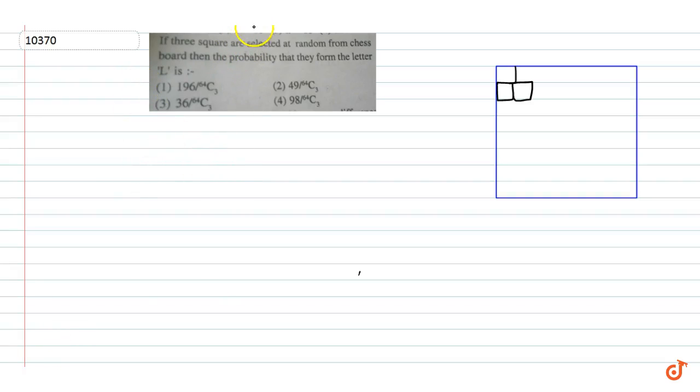In this question, if three squares are selected at random from a chessboard, then the probability that they form the letter L is one. Here we have the three squares selected. The formation of the squares will look like this.